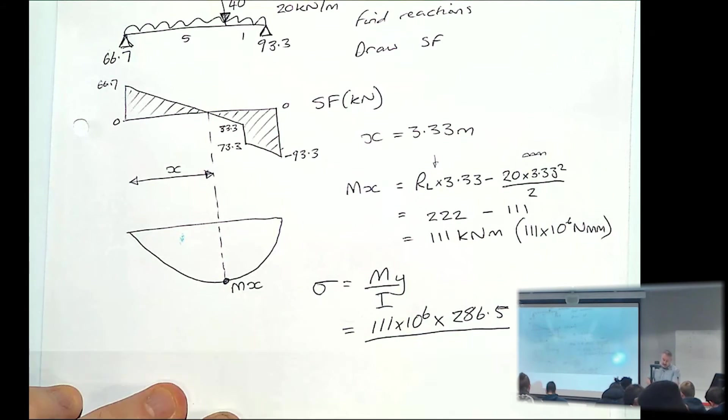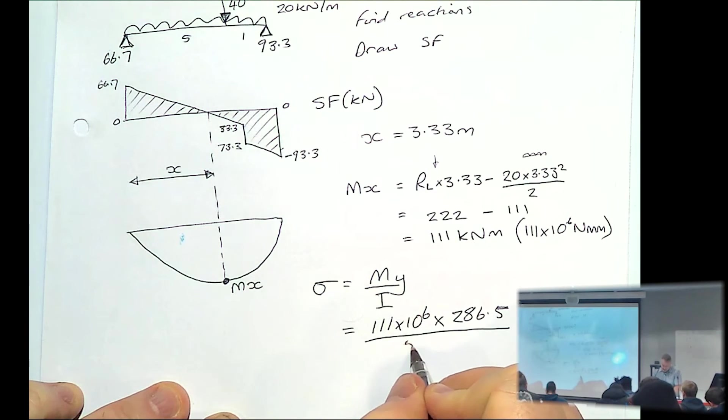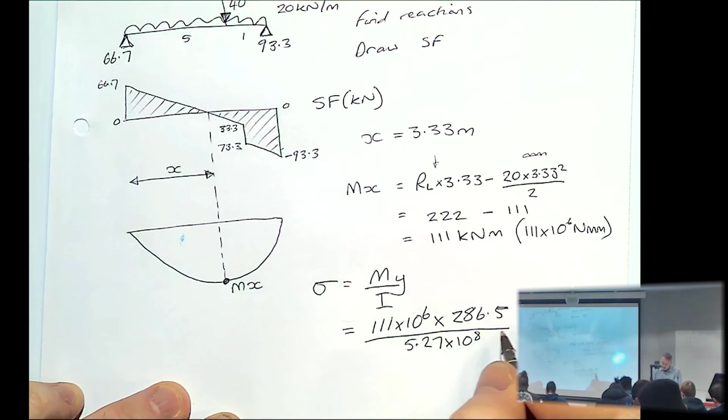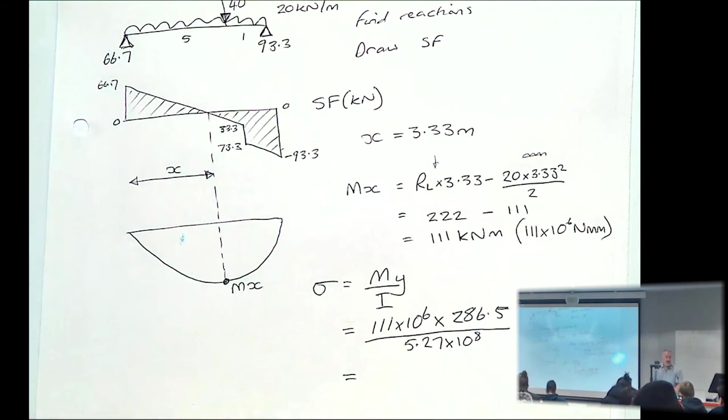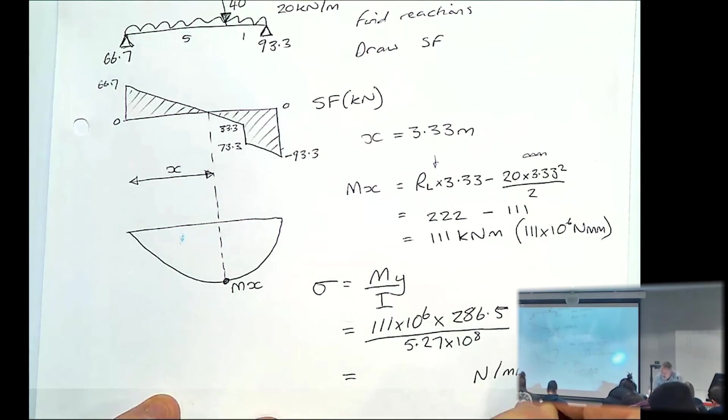And our I value, we worked out, no it didn't work out, I told you it's 5.27 times 10 to the 8. And I haven't got my calculator. Who can give me an answer? That will be in newtons per millimetre squared.